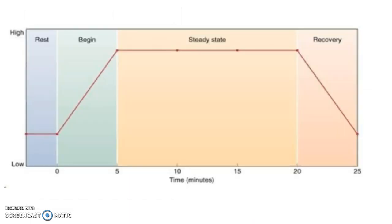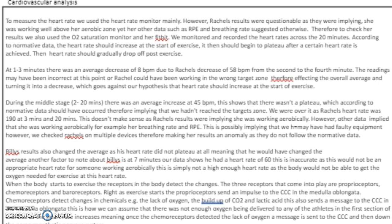In Billy's data, from the 1st to 4th minute there is an increase from 90 to 100. He then has a steeper increase from the 4th to 6th minute, from 100 to 150. At the 6th minute his heart rate drops from 160 to 55 in the 7th minute, which would not be expected. It then increases again to 160 in the 8th minute and continues to fluctuate between 100 and 180 until the 19th minute. Billy's data is peculiar, with many results not following normative trends, so we will probably redo this test on Billy to check the recordings.